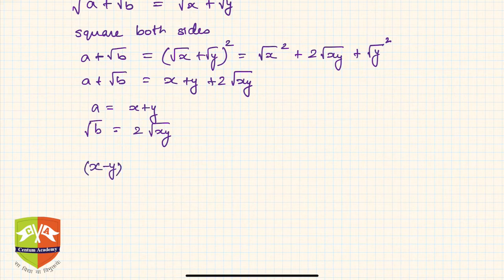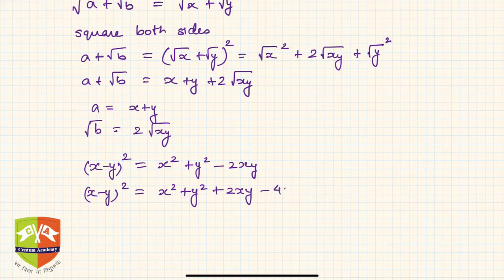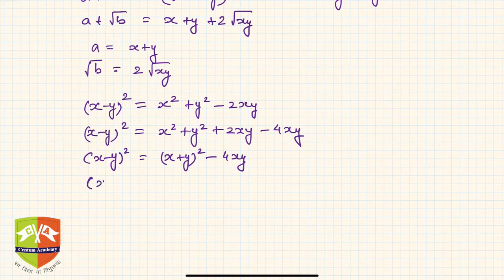Now we need to find x − y, because knowing x − y along with x + y makes it easy to find x and y. We write: (x − y)² = x² + y² − 2xy = (x² + y² + 2xy) − 4xy = (x + y)² − 4xy. Since x + y = a and 4xy = b, we get (x − y)² = a² − b.